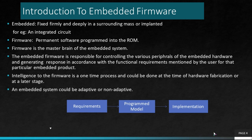Coming to the introduction to Embedded Firmware. 'Embedded' means fixed firmly and deeply in a surrounding mass, or something that is implanted. For example, an integrated circuit — an integrated circuit is formed when a large number of chips are being embedded onto a single substrate, or when the chips are being implanted. So I hope you now have an idea of what 'embedded' means.